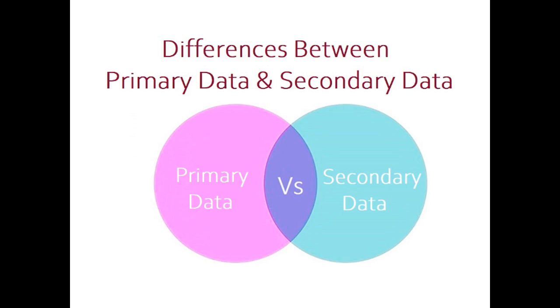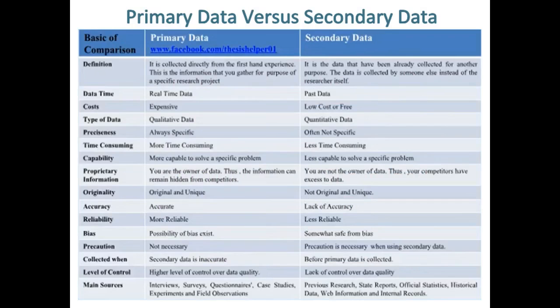Differences between primary data and secondary data. Primary data is collected directly from first-hand experience. It is the information that you gather for the purpose of a specific research project. Secondary data, on the other hand, is data that has already been collected for another purpose — collected by someone else instead of the researcher itself.